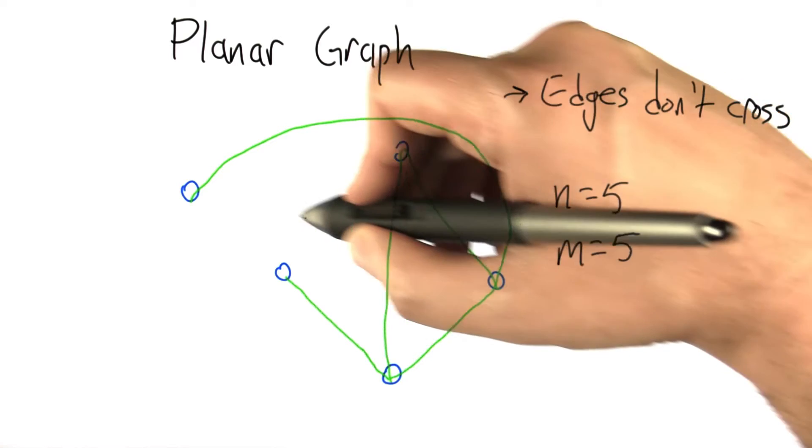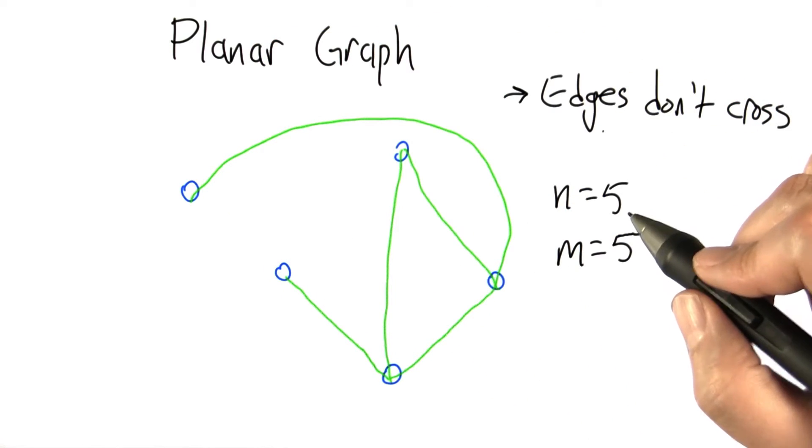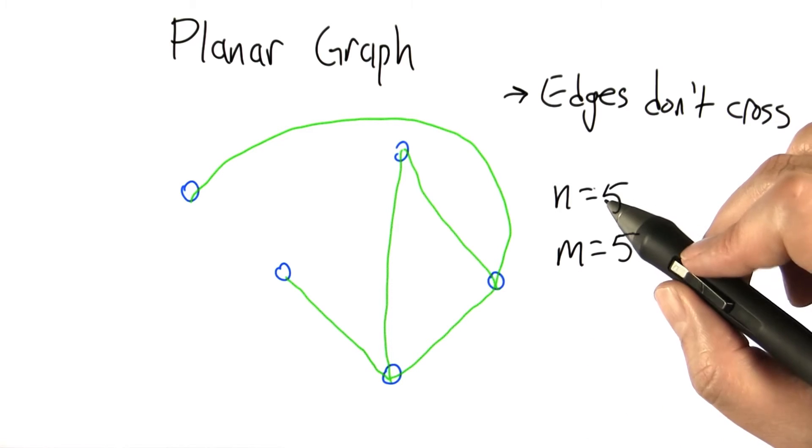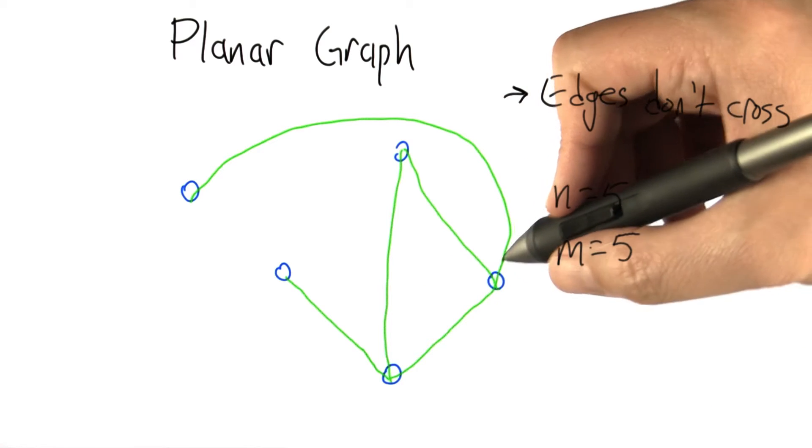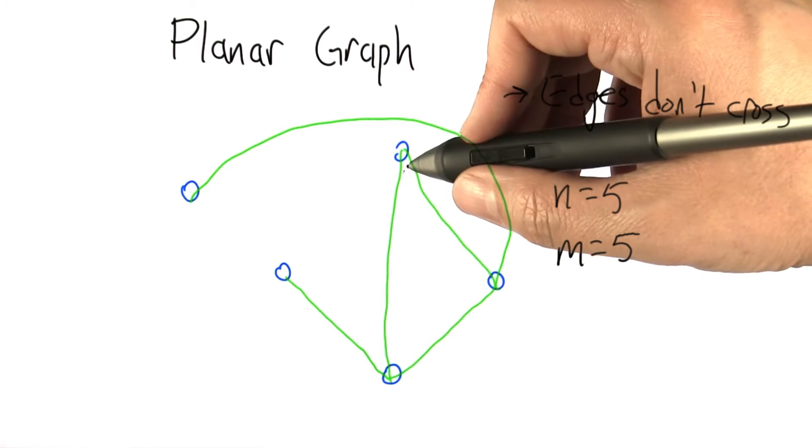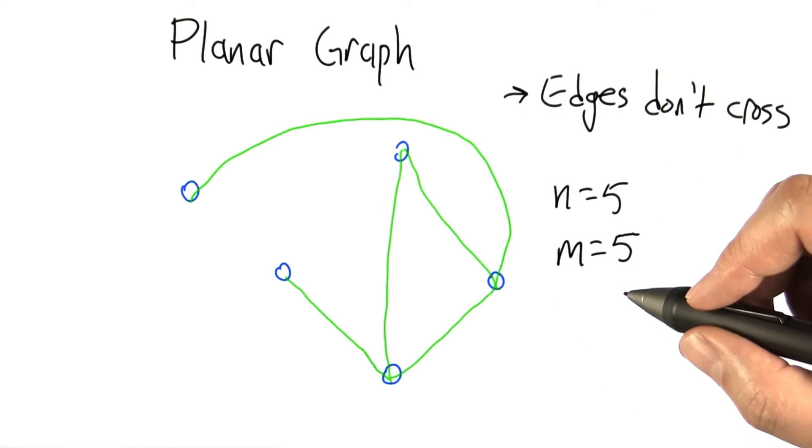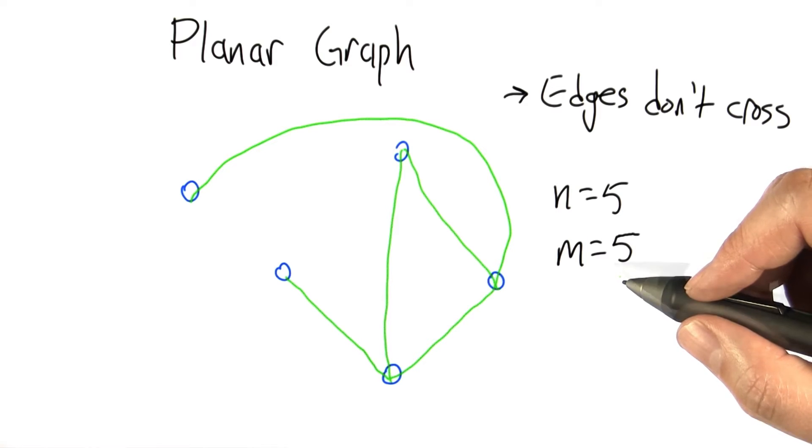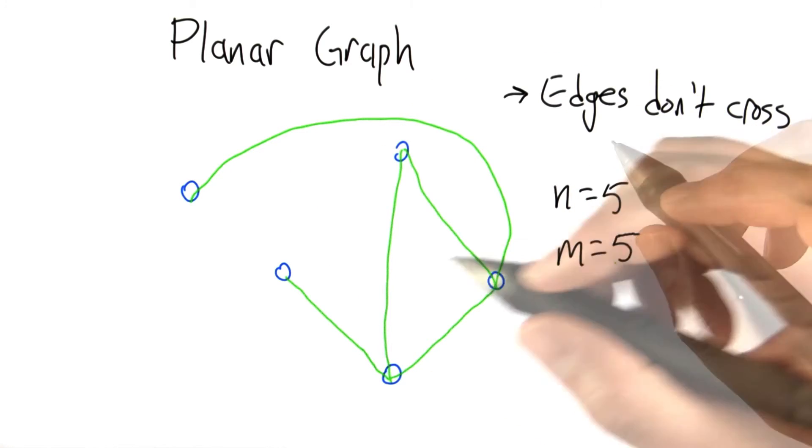It still would be a planar graph even if I drew it with a crossing in it because the issue is that there's some way to do it so the edges don't cross. Now in this particular example we've got 5 nodes and 5 edges, but what we're interested in is what is the relationship in general between the number of nodes in a planar graph and the number of edges. This is a more complicated example than any of the ones we looked at before in this unit. There is some kind of a relationship and there's constraints by virtue of the fact that the graph is drawn in the plane. Let's take a look at that.